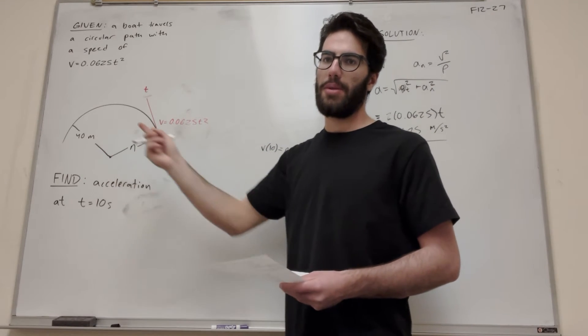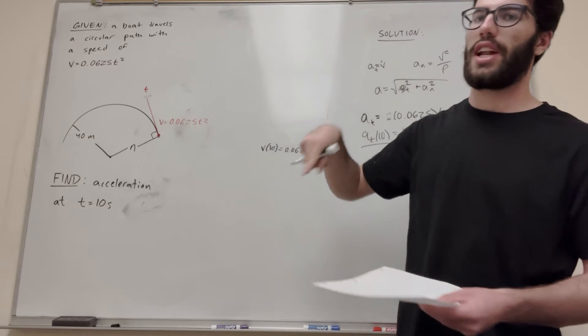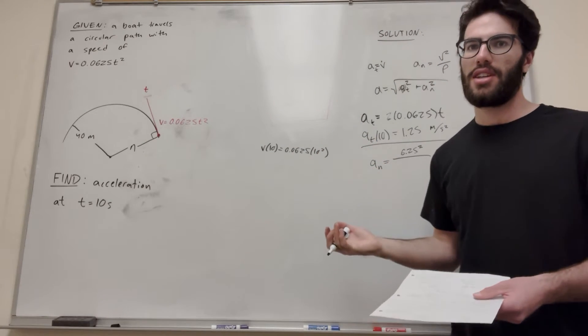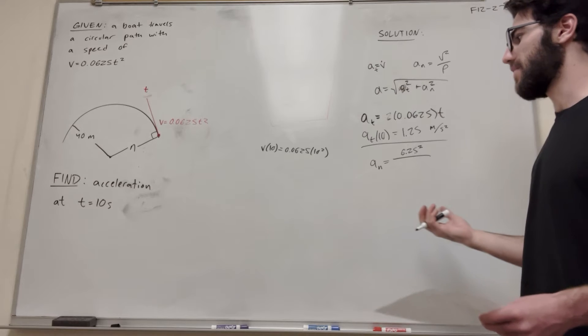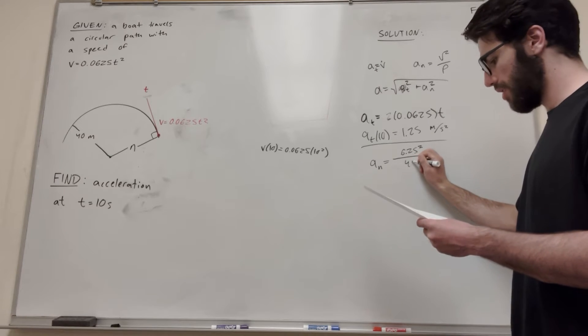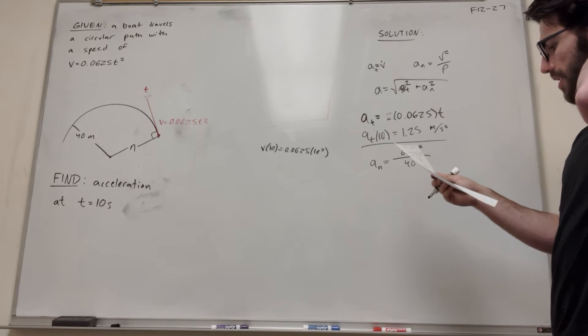If we look at our diagram here, we know that the radius of this circle that it's traversing is 40 meters. So we don't have to do any math to find out what the radius of curvature is. We just know it's going to be 40. So there we go.